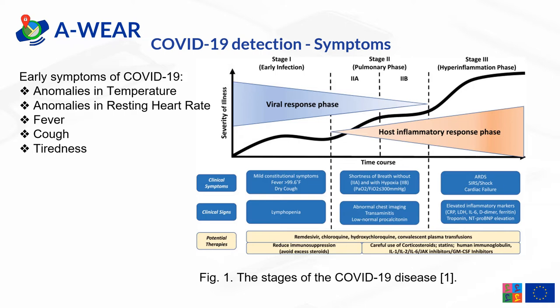The risk factors for this disease are old age, civilization diseases, adrenal and hepatic dysfunction. You can also see on the left side what the early symptoms of COVID-19 are: anomalies in temperature, anomalies in resting heart rate, fever, cold, or tiredness. Based on such symptoms, it is possible to distinguish a COVID-19 disease from a healthy person.